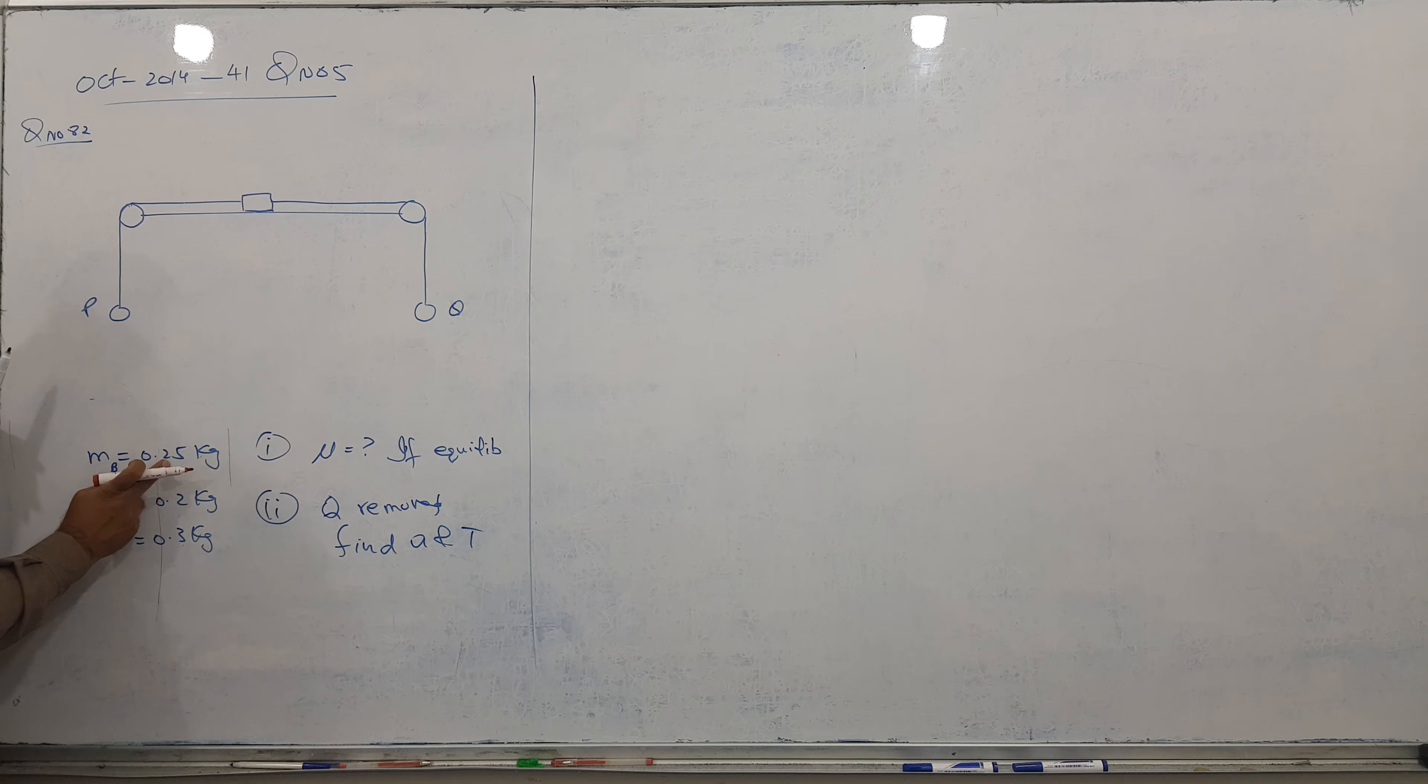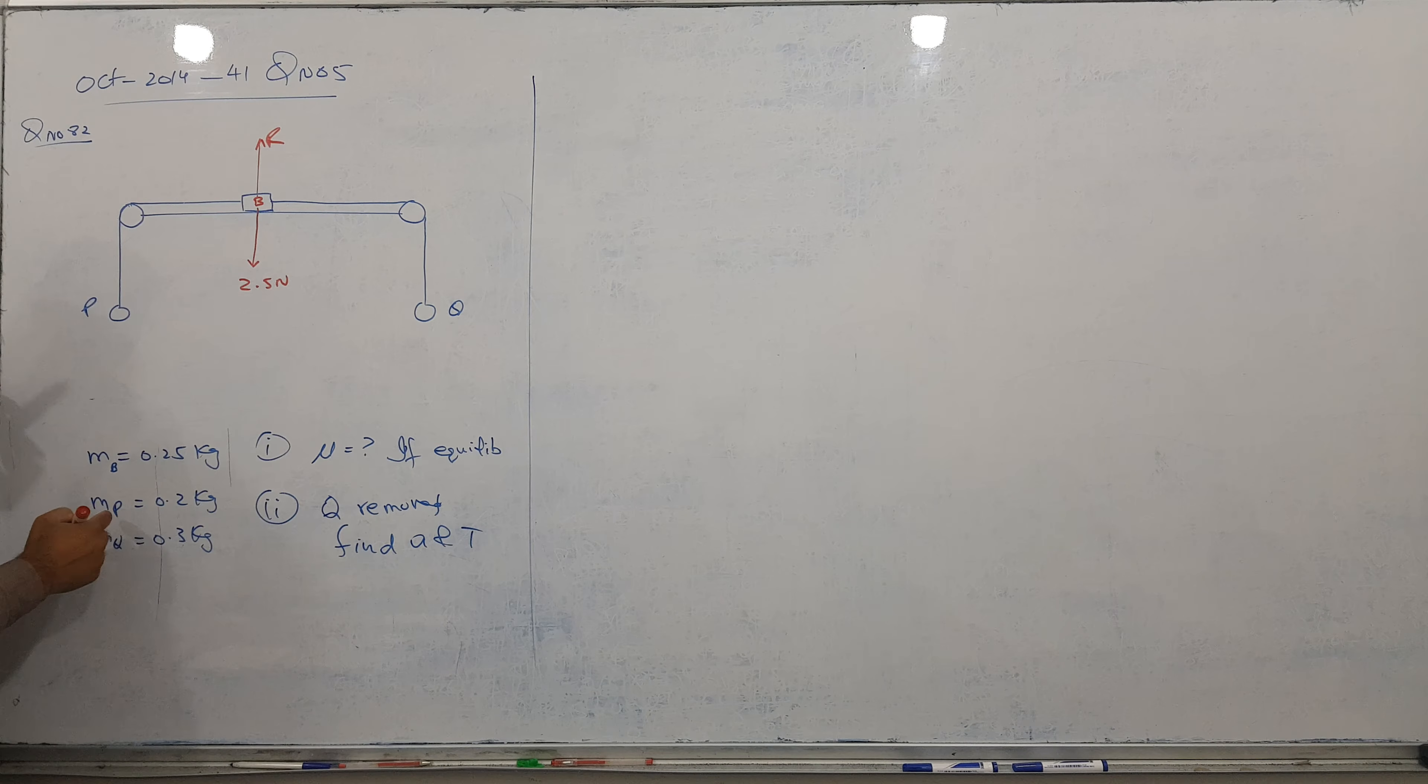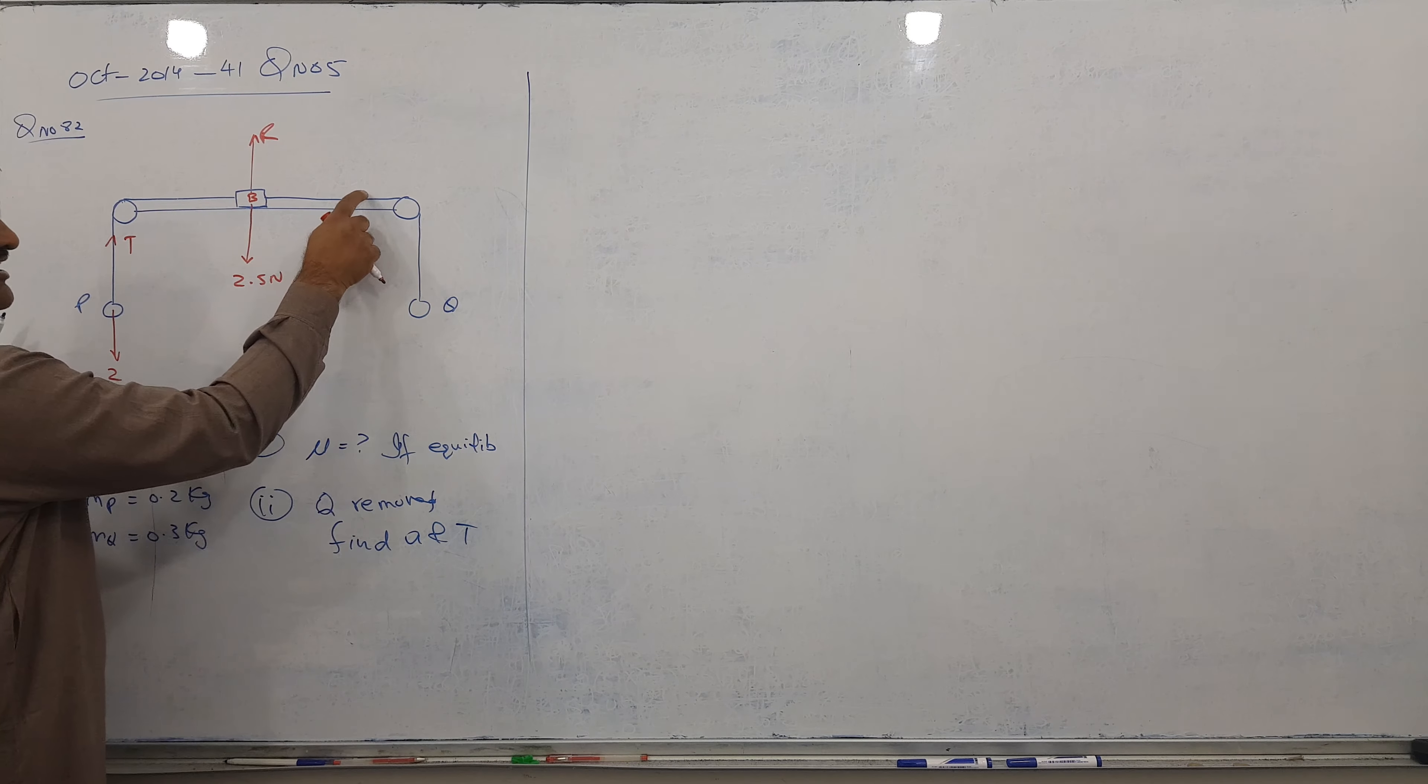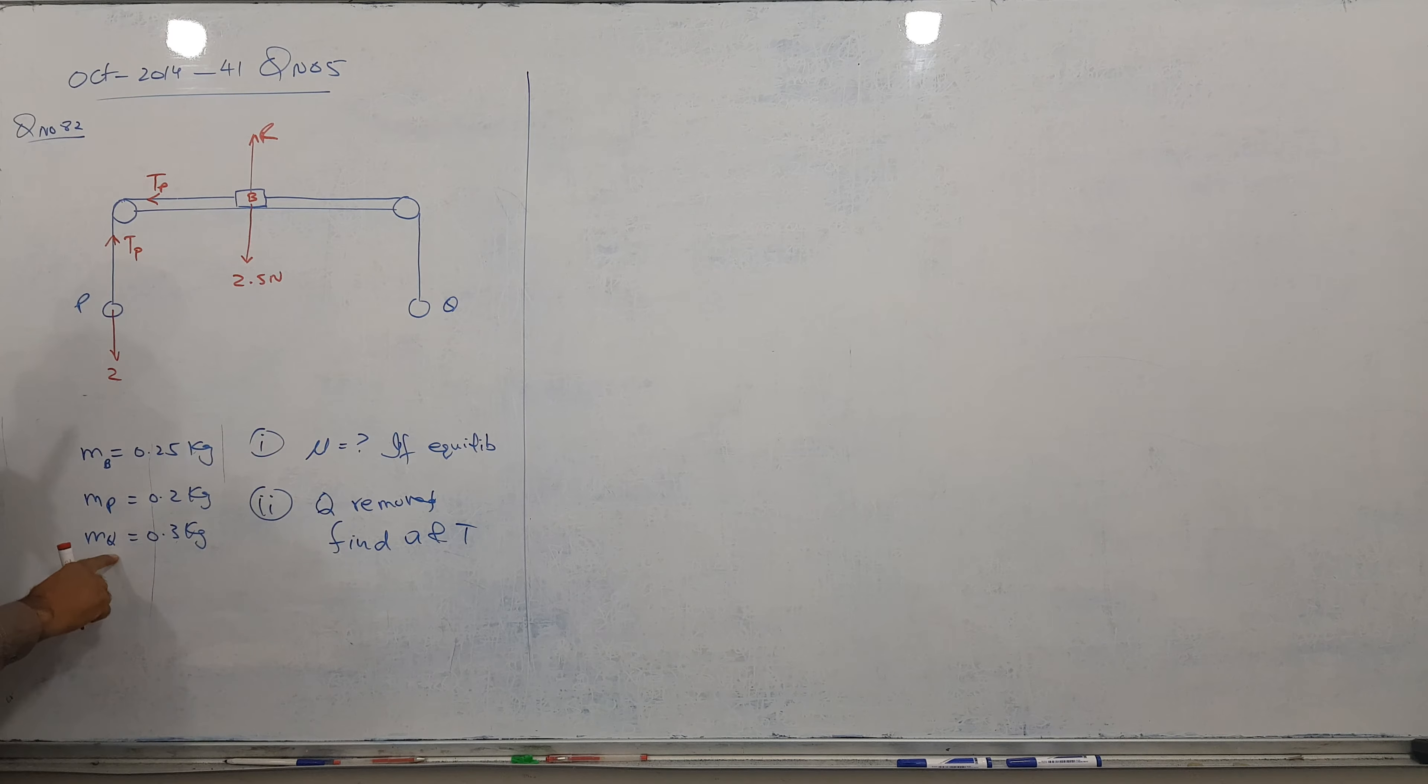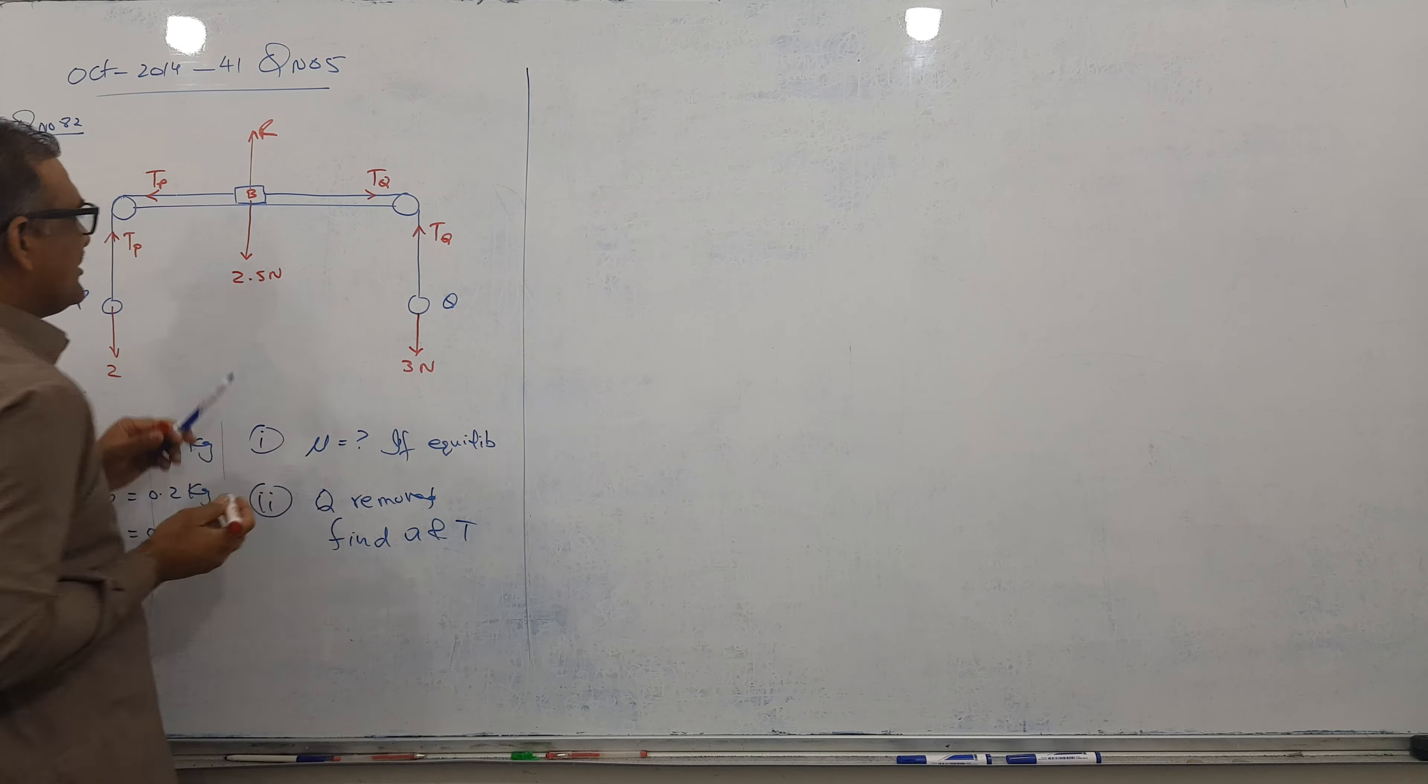Mass of B particle 0.25. So it means here B, this is B. Downward, it's very clear, it is 2.5 Newton. Upward is capital R. And P particle is here, 0.2 into 10, we got 2 Newtons downward. I've given this name tension P because this string is not connected. Tension in string here and here are different from each other. And this Q, mass 0.3 into 10, I'm getting here 3 Newtons. This I've given tension Q, and this is also tension Q. I think this is very clear.